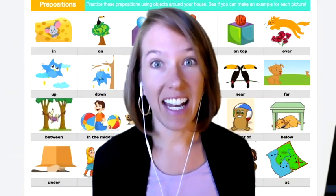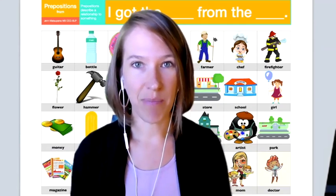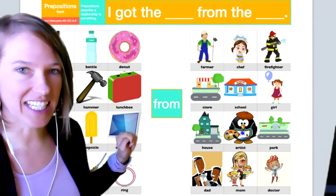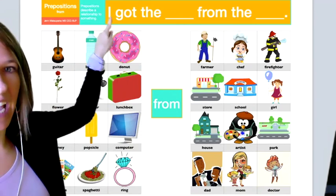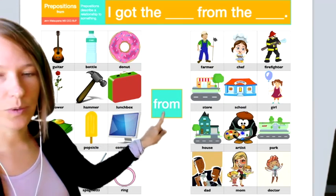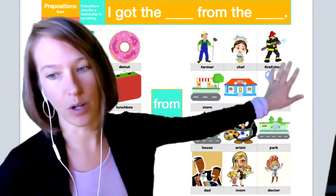So let's go ahead and get started and look at some pictures for you to talk about. We've got some pictures up behind us now, and we're going to be using the word from. So our sentence stem up at the top says, I got the something from this side, and who we got it from over here, or where we got it from over here.